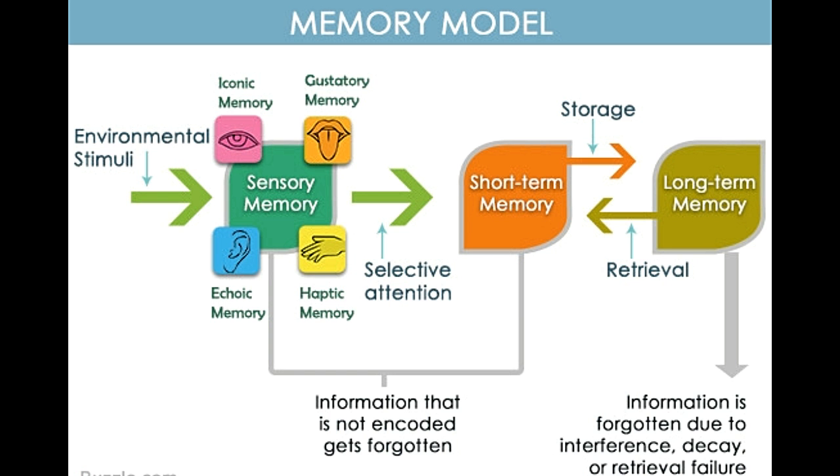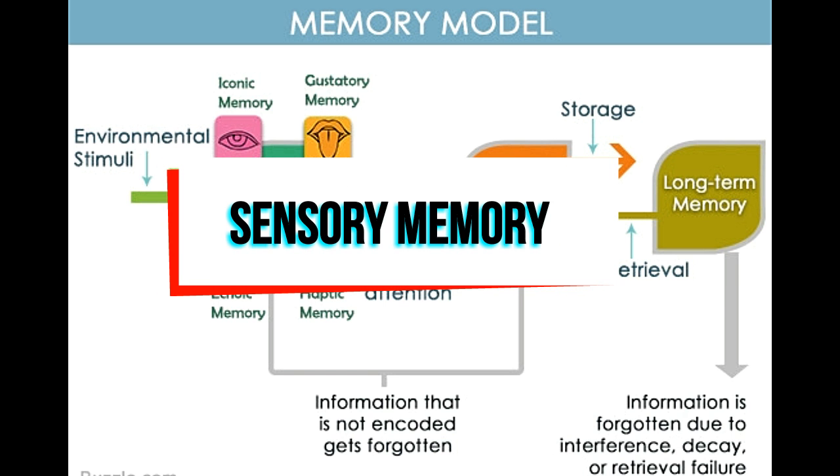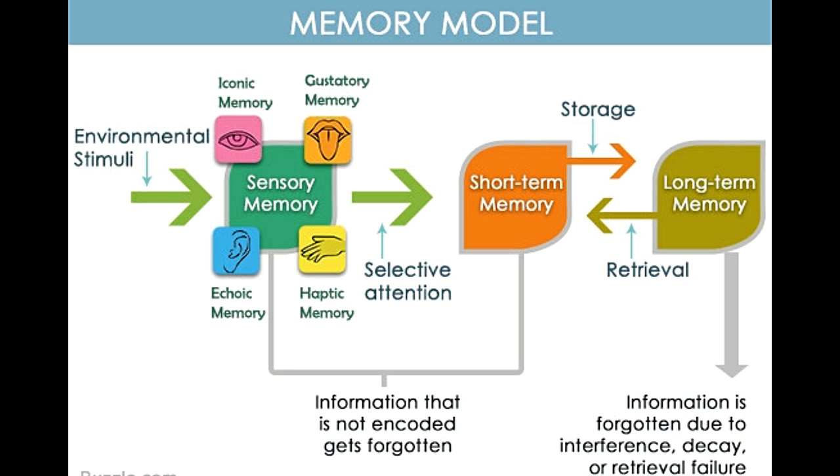In the first stage of memory, an exact copy of the information gathered through the senses is stored for a very short duration. Our senses are working constantly, which is why we focus on a limited amount of information that we consider as relevant. The sensory memory has a large capacity and includes systems associated with each sense. In the encoding process, a substantial amount of information is gathered through the sense of sight and hearing.